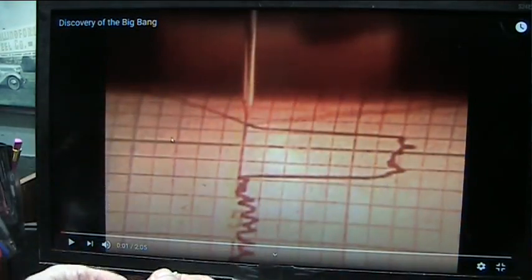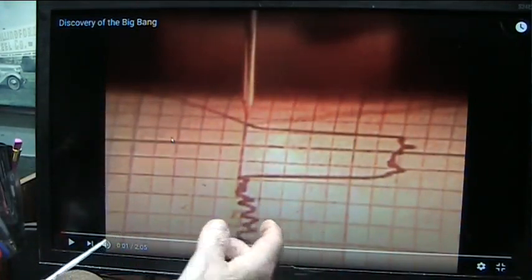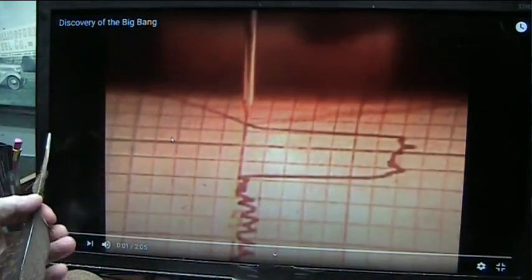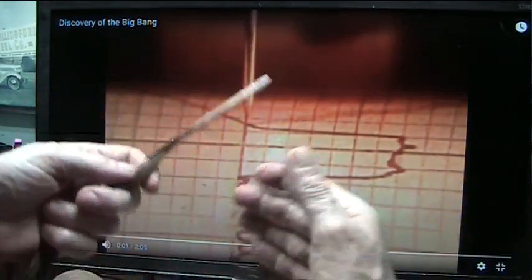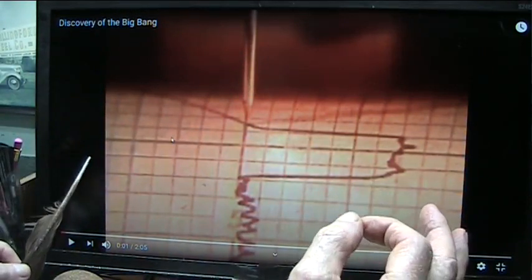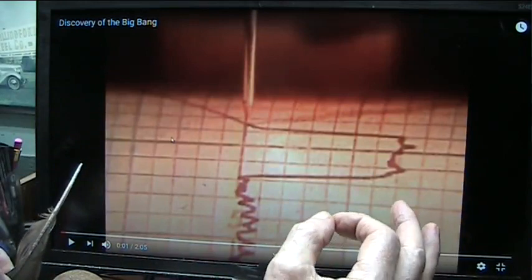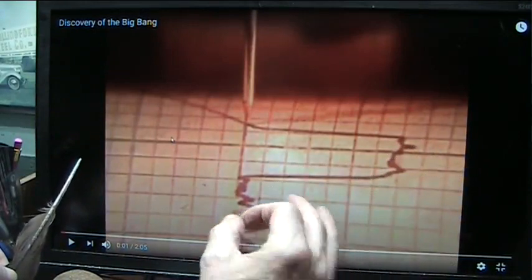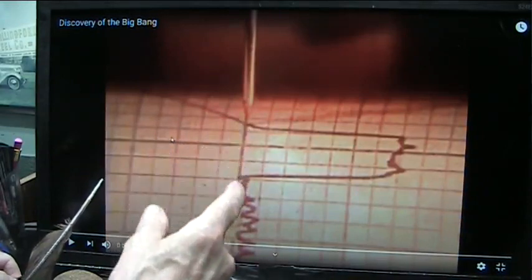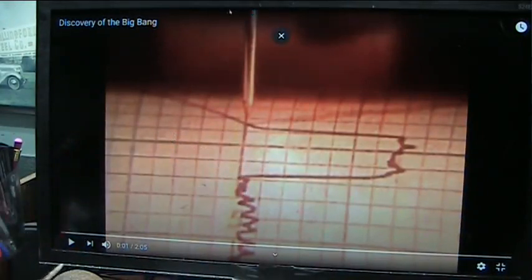And what that equates to is a three degree temperature from absolute zero. Down here would be absolute, total, 100 percent, no energy whatsoever. And here they have three degrees worth of energy. Three above absolute zero. Extremely, extremely cold. Well, the reason they're getting these particles is because everything in space gives off particles.